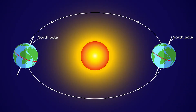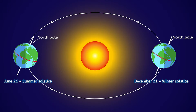In North America, the summer solstice is around June 21st and is the longest day of the year, because the North Pole is tilted closest to the Sun, giving us the most daylight hours. The winter solstice is around December 21st and is the shortest day of the year, because the North Pole is tilted furthest from the Sun, giving us the fewest daylight hours.